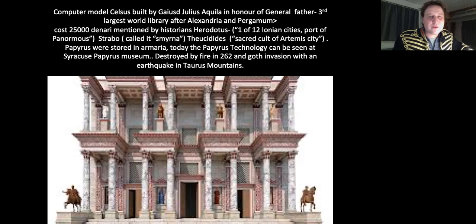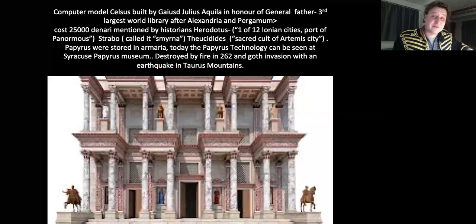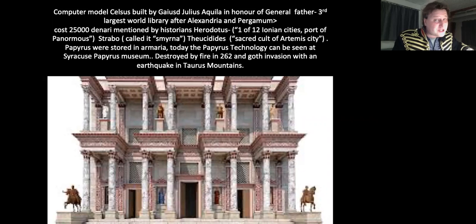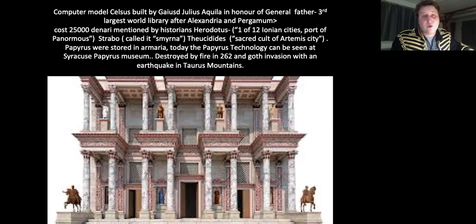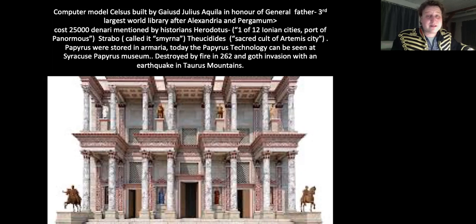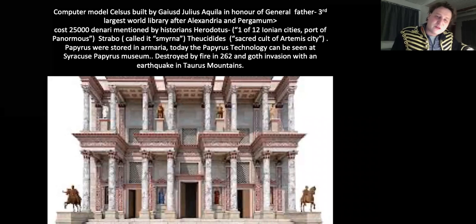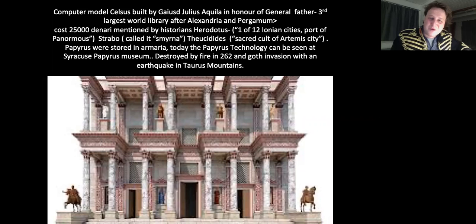It's one of the three massive libraries of the ancient world, the others being Alexandria in Egypt and Pergamum, also in Turkey. The city of Ephesus is mentioned by many historians — it was part of the Trojan War, Amazons lived there, and the ancient city of Smyrna is suggested to have been there by Strabo the Roman historian. Thucydides said it was the site of the ancient cult of Artemis, the goddess of hunting. Interestingly, this building was not just a functional library.